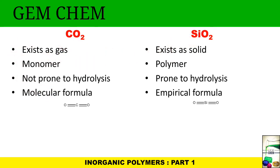What is the difference between these two? Carbon dioxide belongs to the gaseous state, whereas silicon oxide belongs to solid phase. This is existing as monomer, and this is as polymer. It is not prone to hydrolysis—there is no bond breakage—whereas SiO2 is prone to hydrolysis.